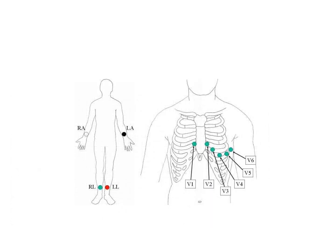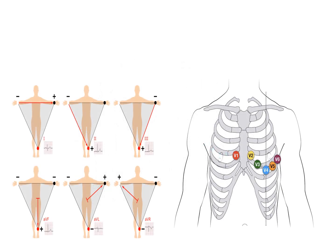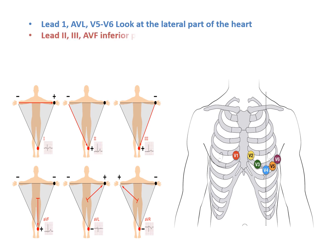The normal 12-lead ECG is recorded using 4 limb electrodes and 6 chest electrodes, and each lead gives a slightly different view of the heart. Leads I and aVL, V5 and V6 look at the lateral part of the heart. Leads II, III, and aVF show the inferior part of the heart. Leads V4 to V5 give a septal and anterior view.